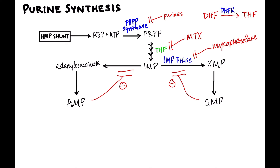That's purine synthesis in a nutshell. Focus on where these drugs work: methotrexate with the folate pathway, and mycophenolate with IMP dehydrogenase. There are no major diseases in purine synthesis itself, but as we'll see in purine degradation, there are diseases that come up there. We will talk about that in our next video.